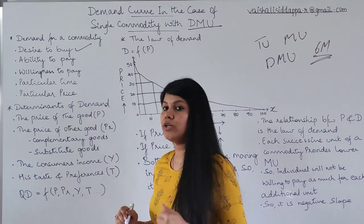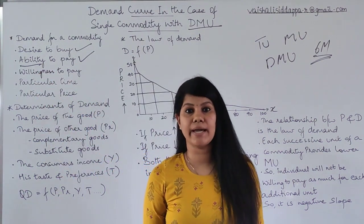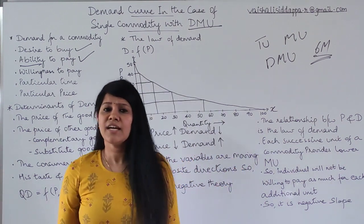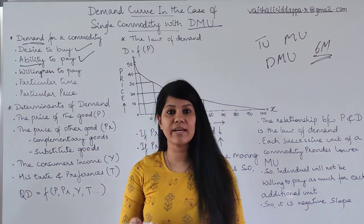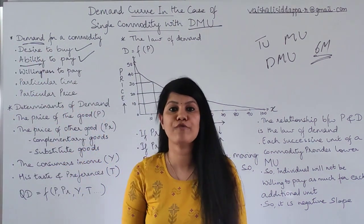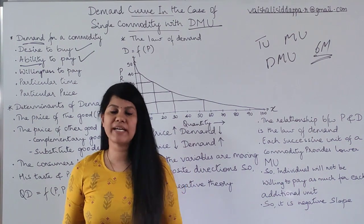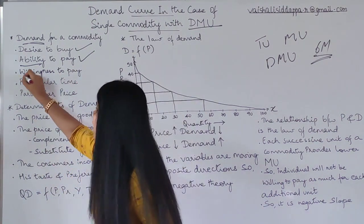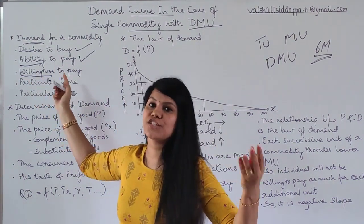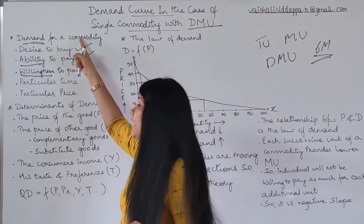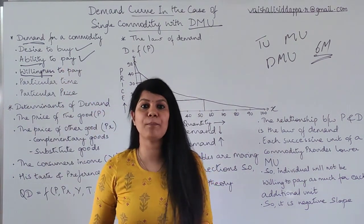After having a desire, the second condition is ability to buy. Just liking something won't be considered as demand. To count it as demand, you should be able to spend for it — you should have enough money in your pocket. If you don't have that much money, it still won't be considered as demand.